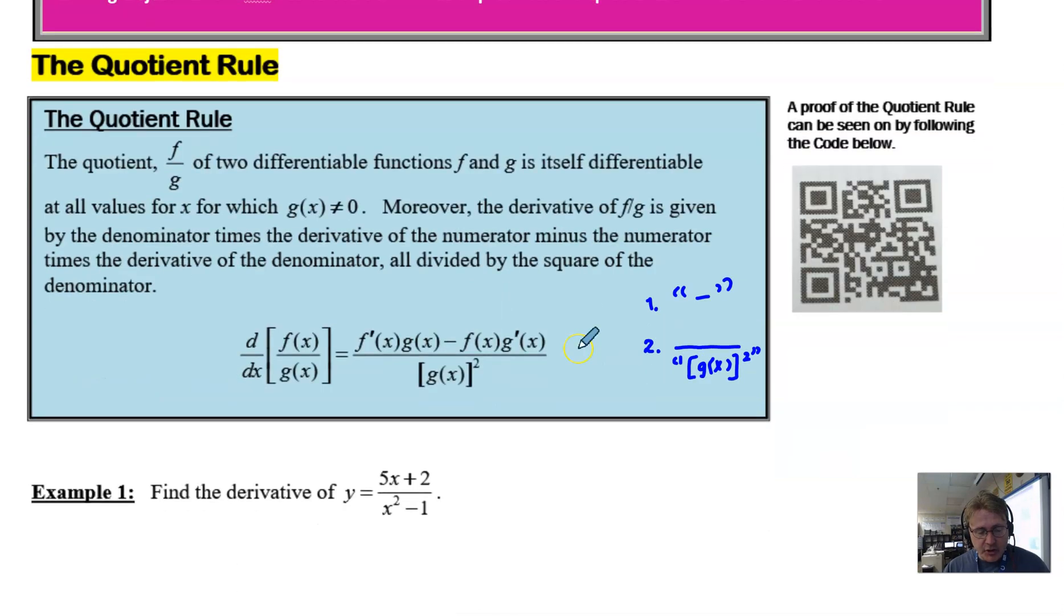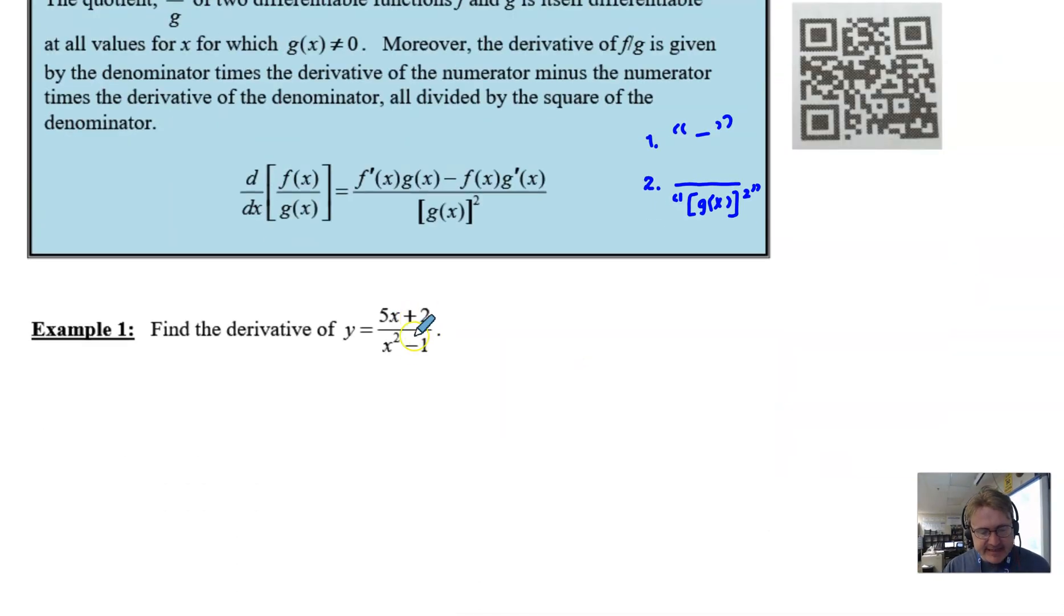All right, so let's take a look at our first example. And as you can see, this example is definitely containing a quotient. You've got 5x plus 2 divided by x squared minus 1. There's really very little that you can do to turn this into anything but a quotient. So we're kind of stuck with it, which means we need this new version of the derivative.